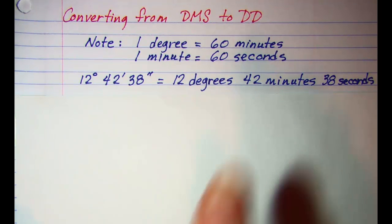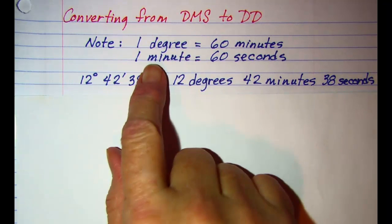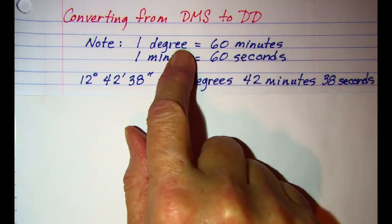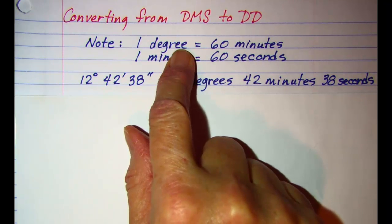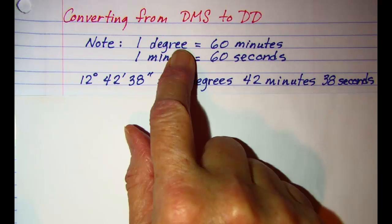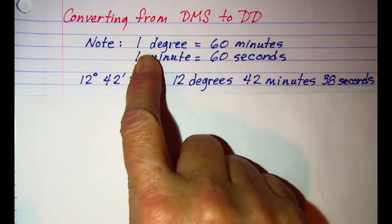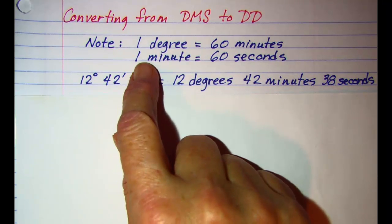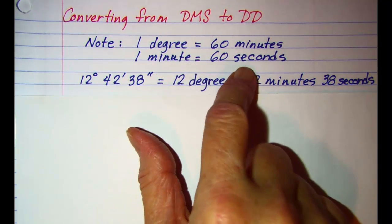Before we do an example, please be aware that one degree is divided into 60 equal parts and each part is called a minute, so one degree is equal to 60 minutes. One minute is equal to 60 seconds.